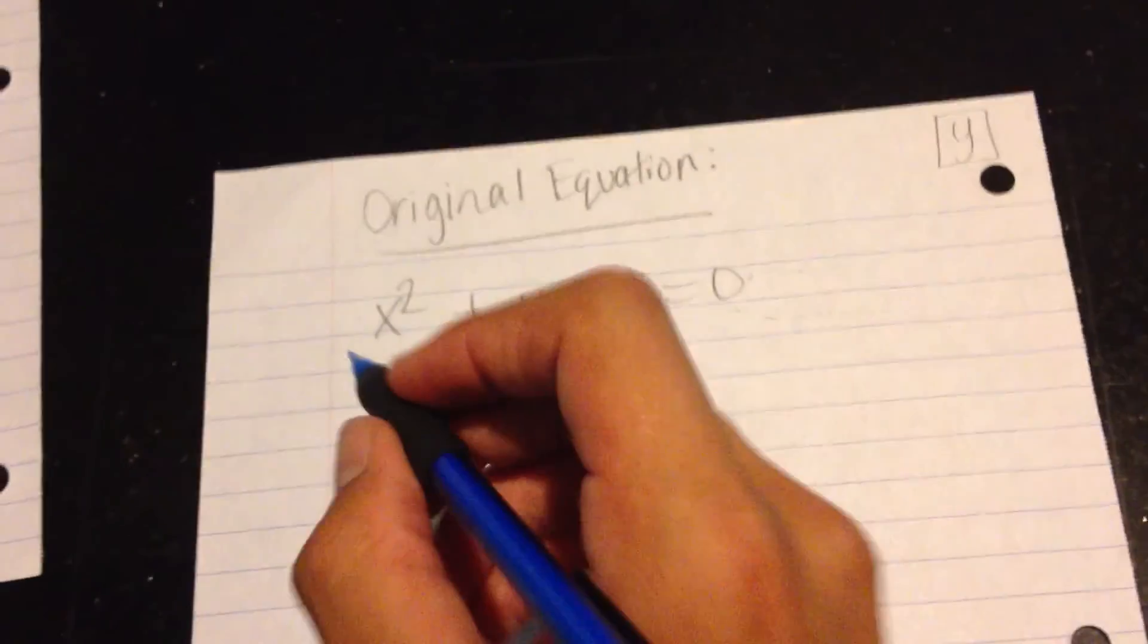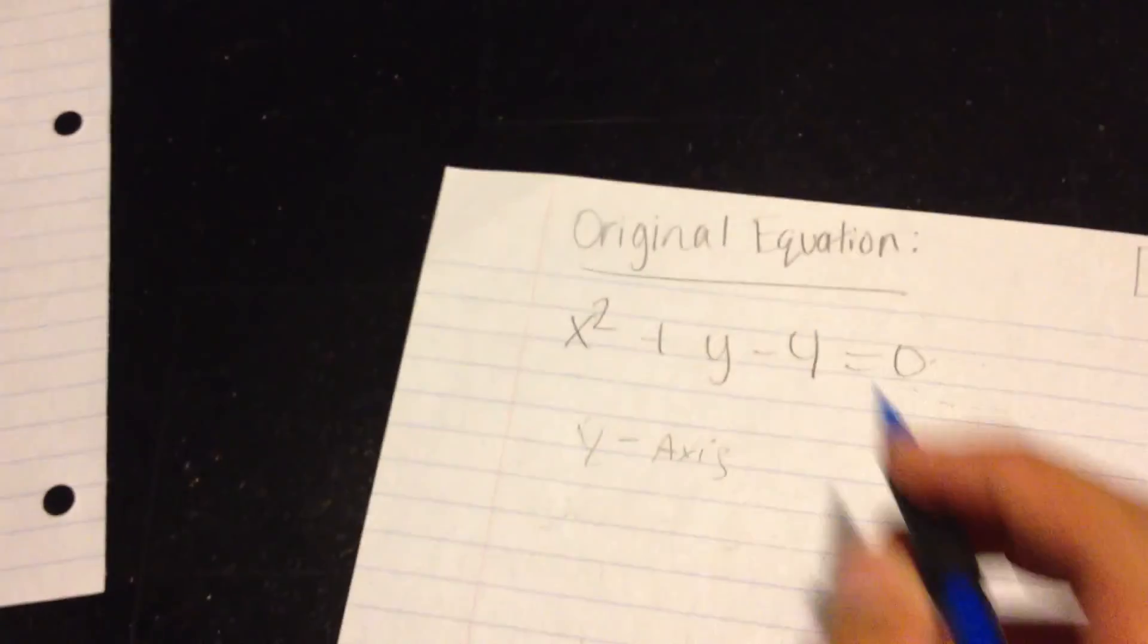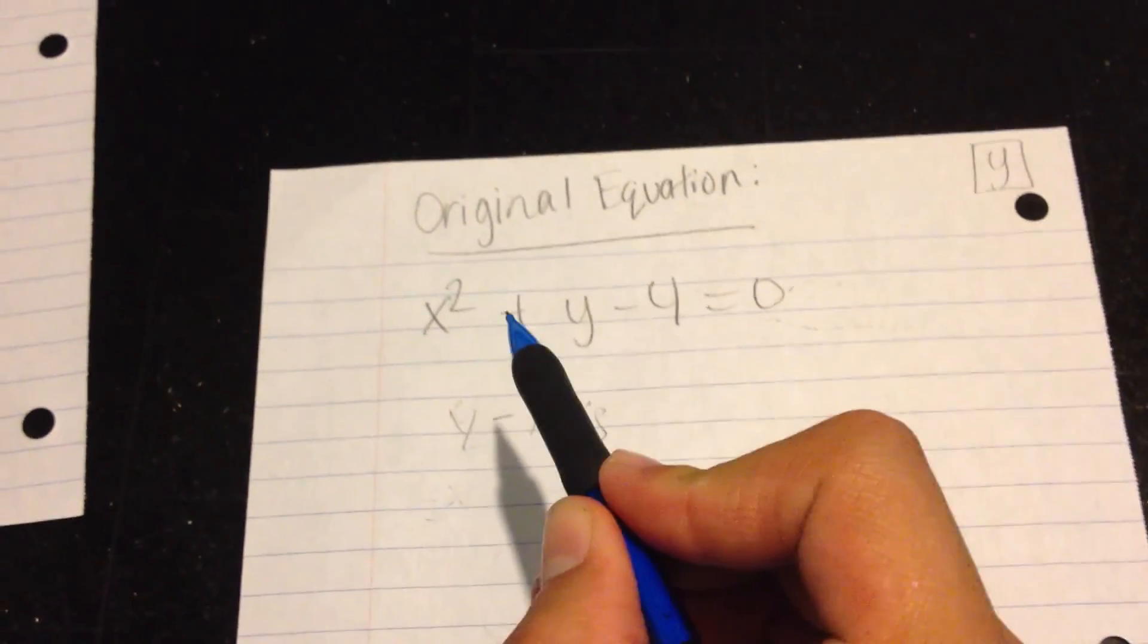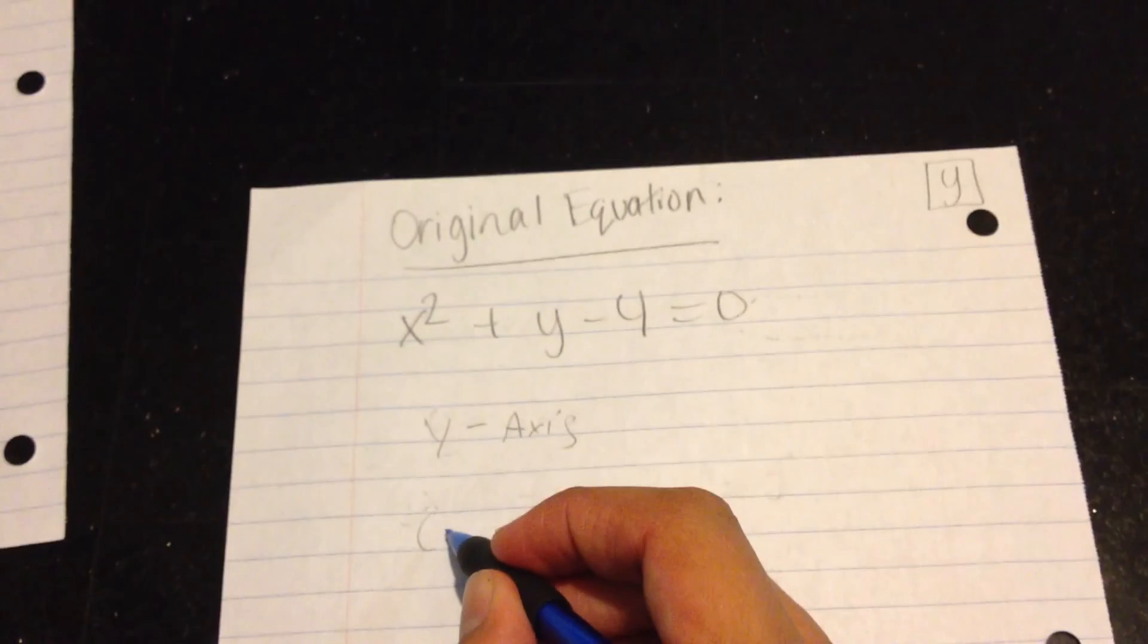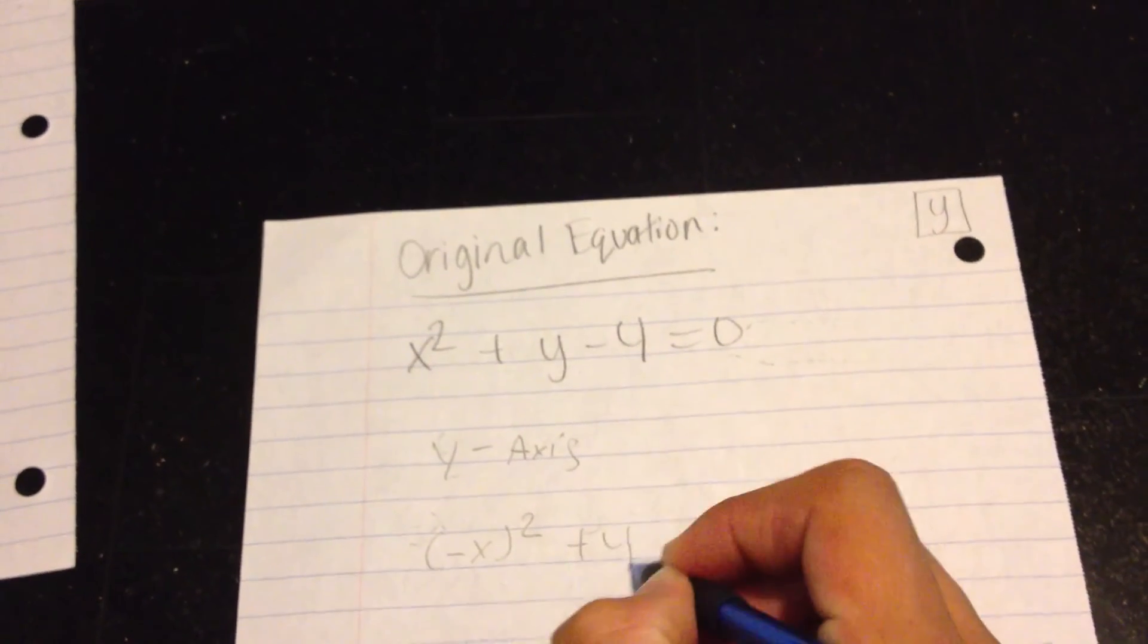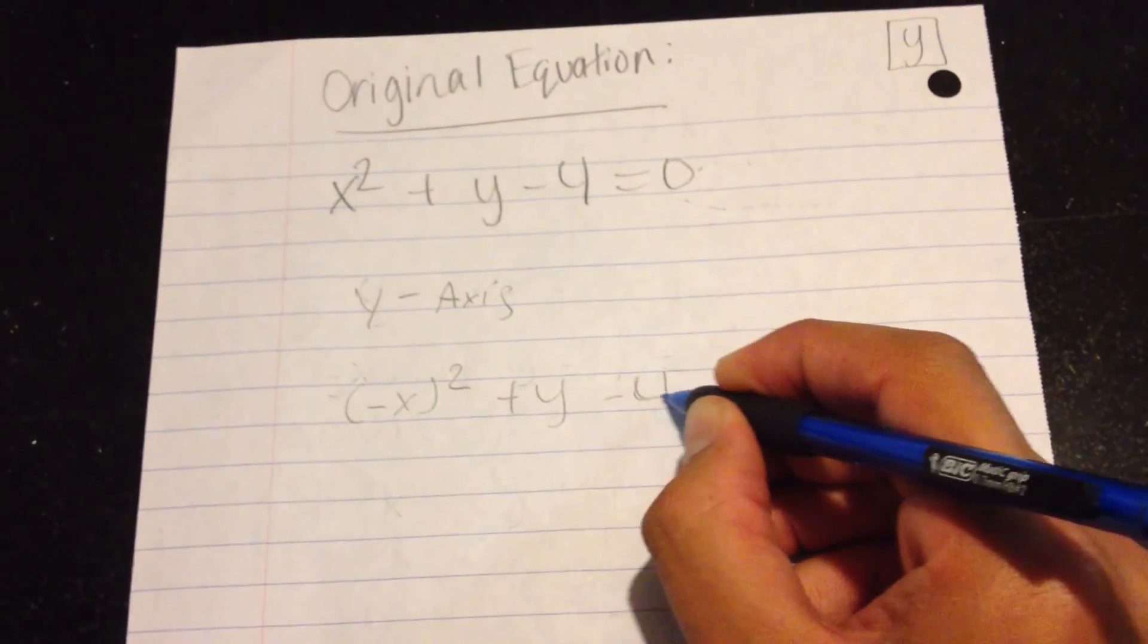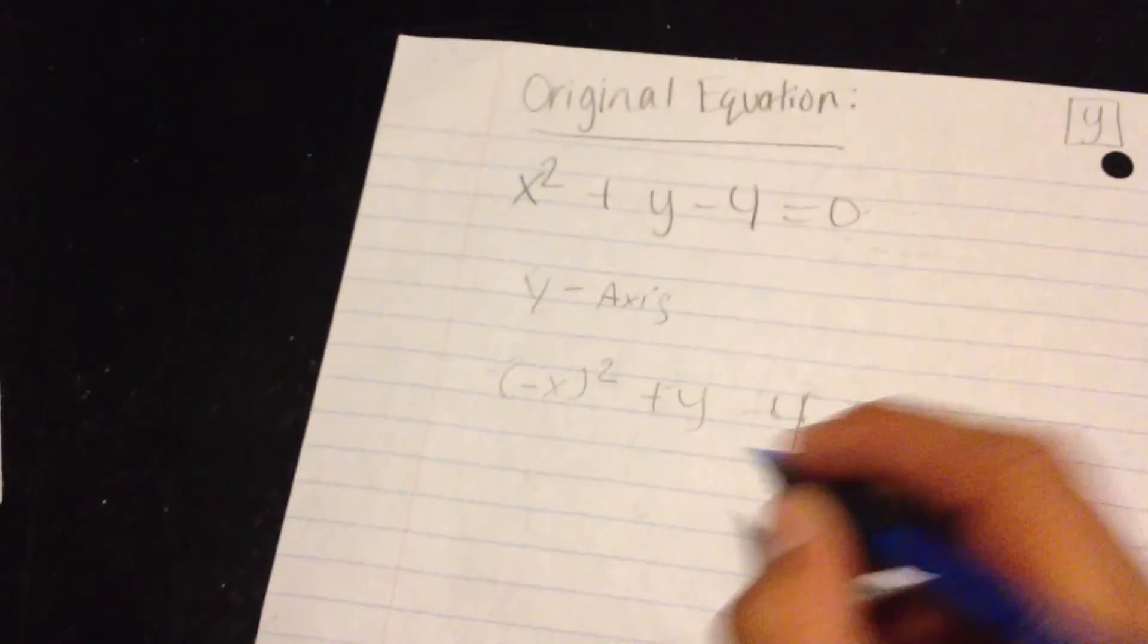Now, next, I will test for y-axis symmetry. So, in this case, what I am going to do is replace any x's, right there, with negative x in this equation, to test for y-axis symmetry. So, right there, we will have negative x² + y - 4, it doesn't look like a 4, but I guess it will have to do, is equal to 0.